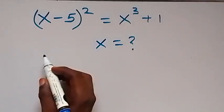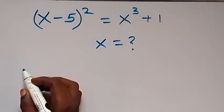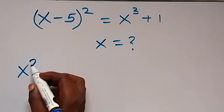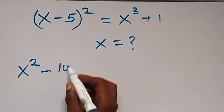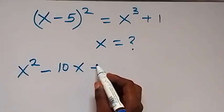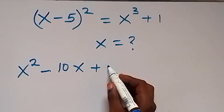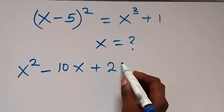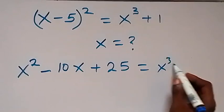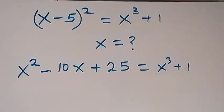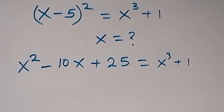On the first method, we can expand the left hand side. This will give us x squared, then minus two times x times five, that's minus 10x, then plus five squared which is 25, then equals x cubed plus 1.